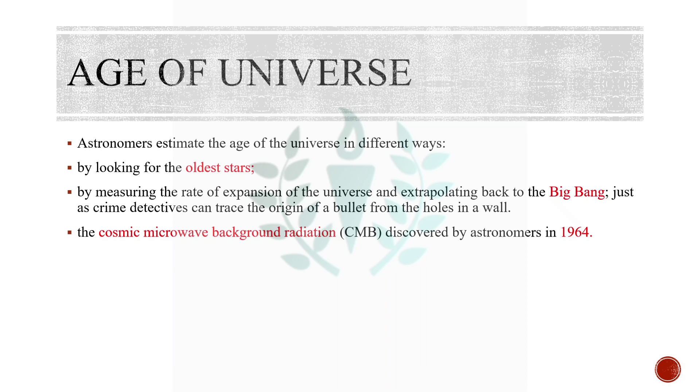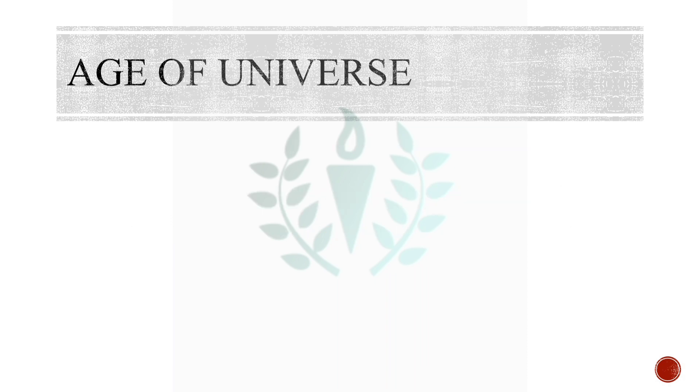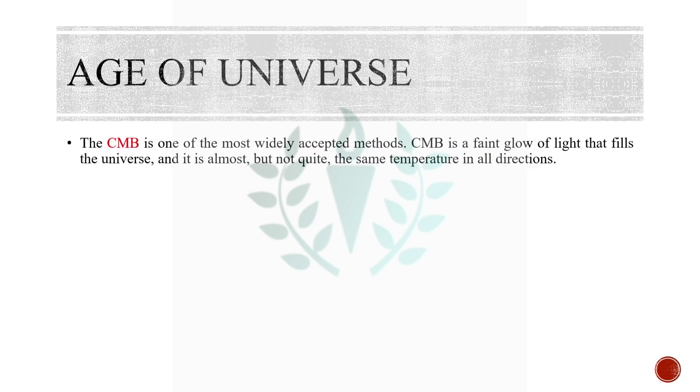The third way of determining the age of universe is through cosmic microwave background radiation or CMB, which was discovered by astronomers back in 1964. Measurement of the cosmic background radiation gives the cooling time of the universe since the Big Bang. Measurements of the expansion rate can be used to calculate its approximate age by extrapolating backwards in time.